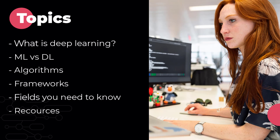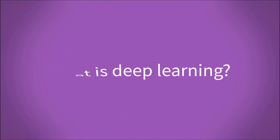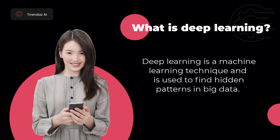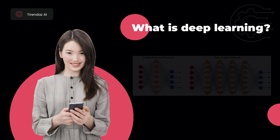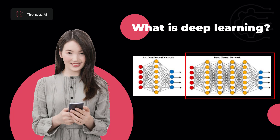Let's get started with what deep learning is. Deep learning is a machine learning technique and is used to find hidden patterns in big data. It is based on the artificial neural network algorithm, which is a machine learning technique. ANNs consist of one hidden layer, while deep neural networks consist of more than one hidden layer.